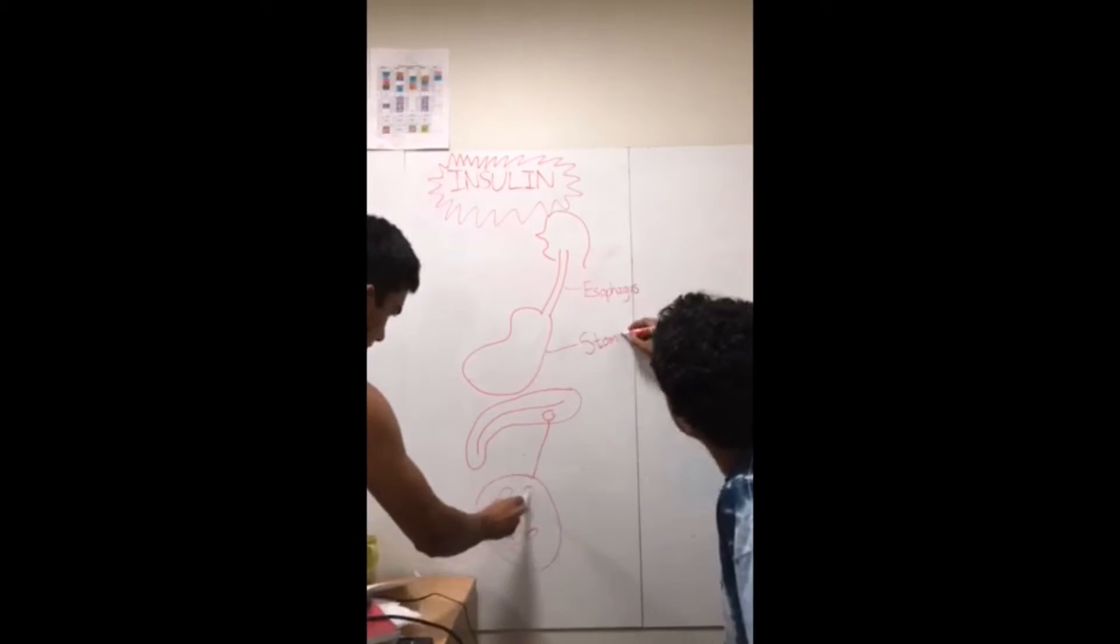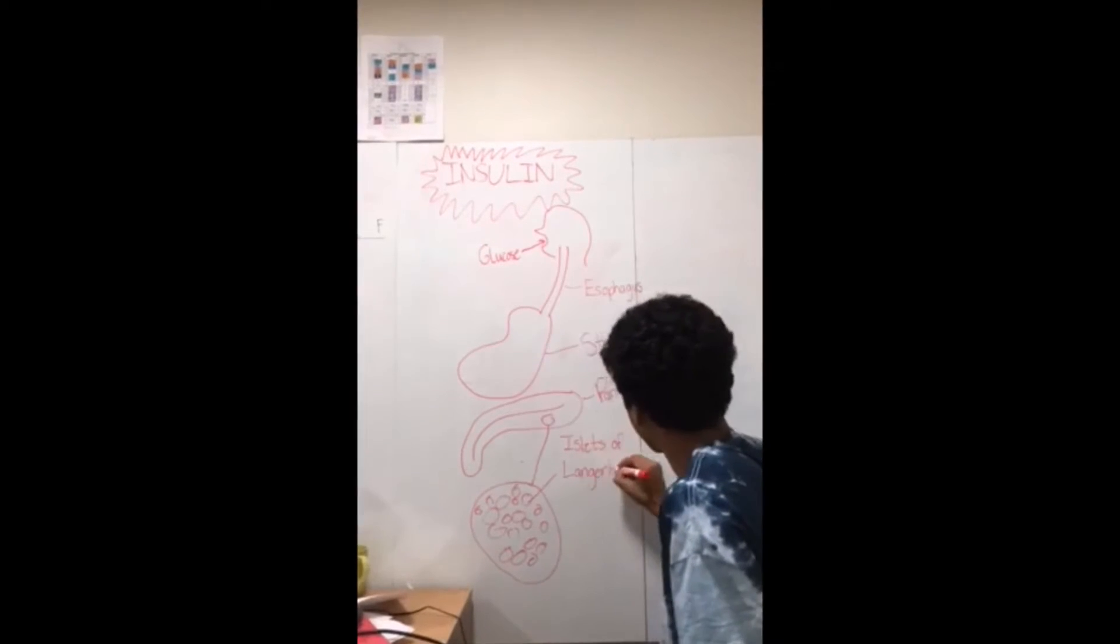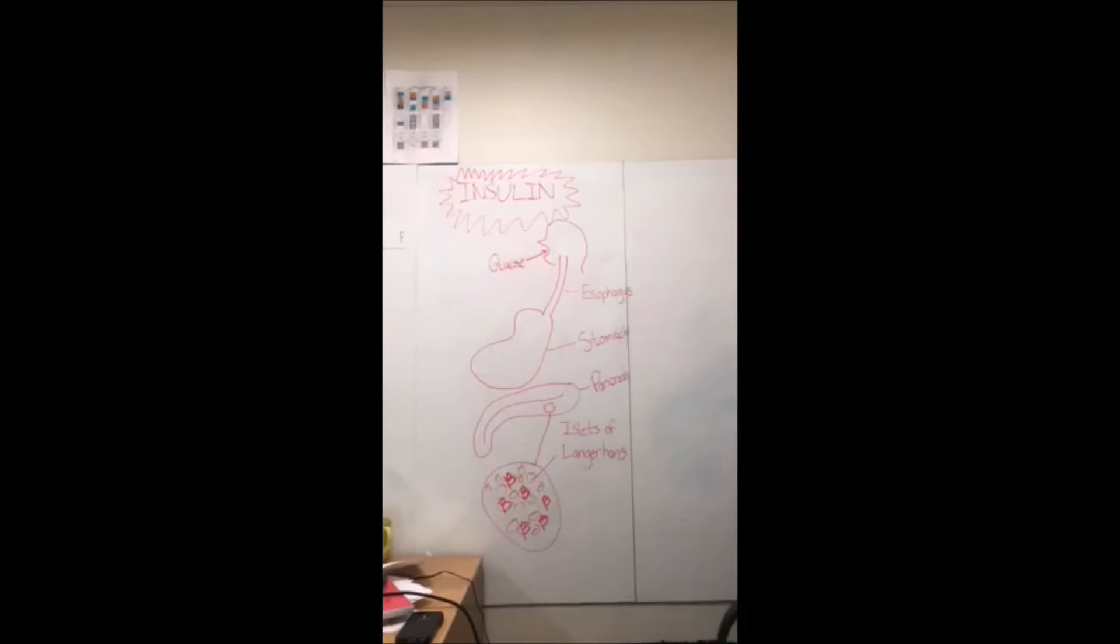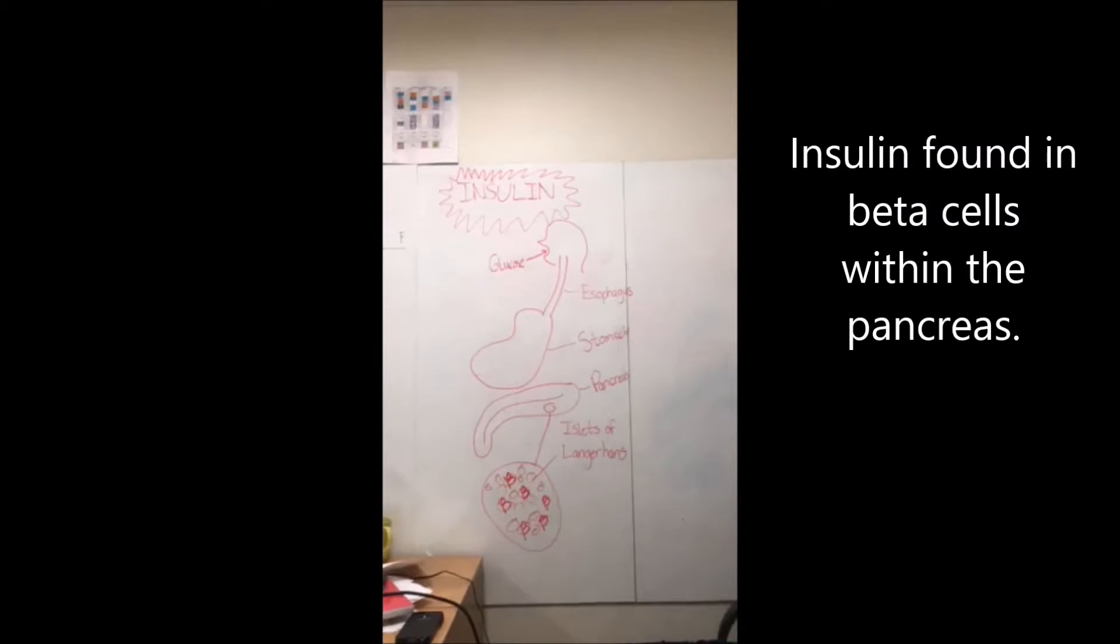It does so by increasing the usage of glucose by tissues such as skeletal muscle and fat cells. Glucose is produced in the beta cells of the pancreas, and a rise in glucose, which often follows a large meal, is also detected by these cells.